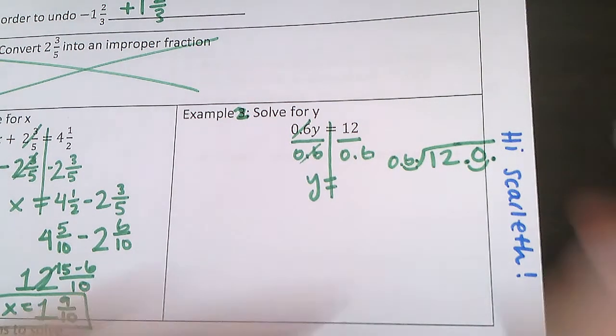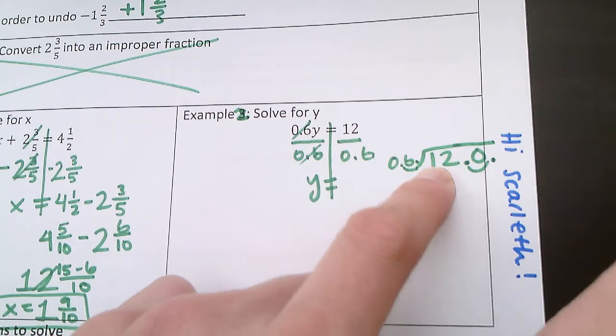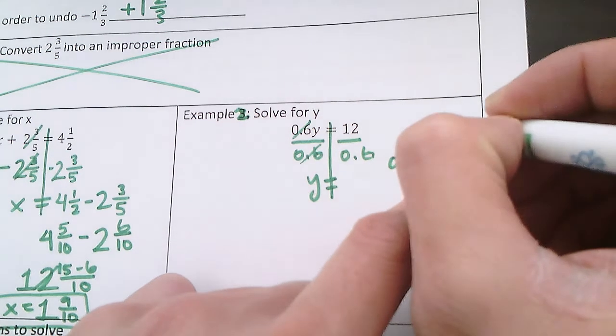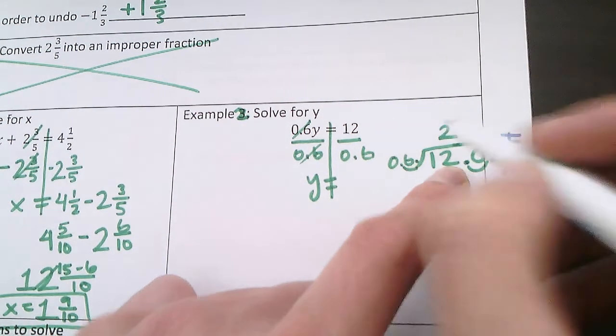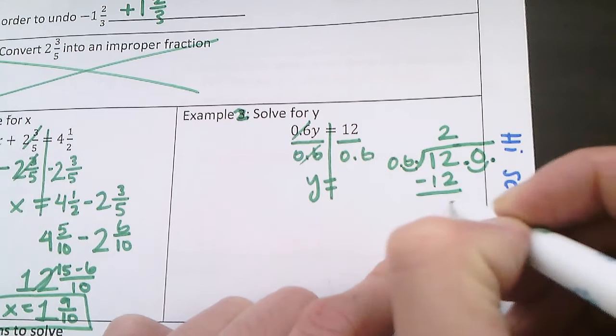And now I can divide. So 6, can 6 go into 1? Nope. But can 6 go into 12? Yes, 2 times. 2 times 6 is 12. 12 minus 12 is 0.